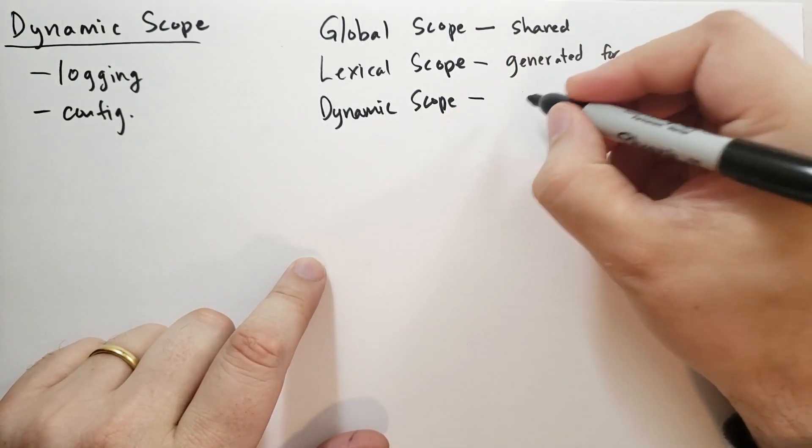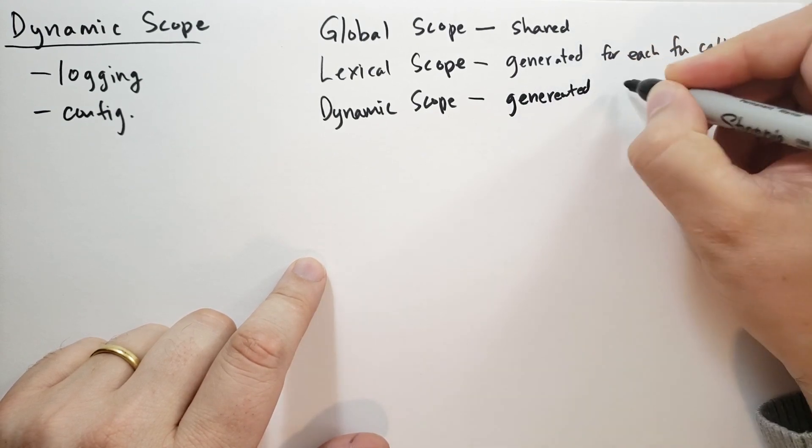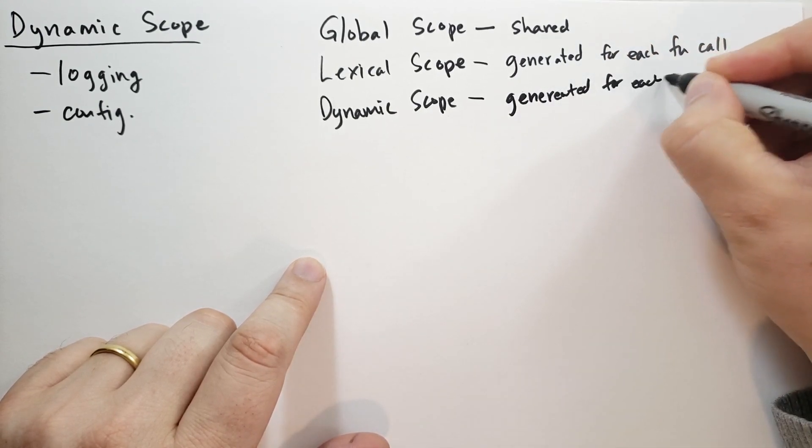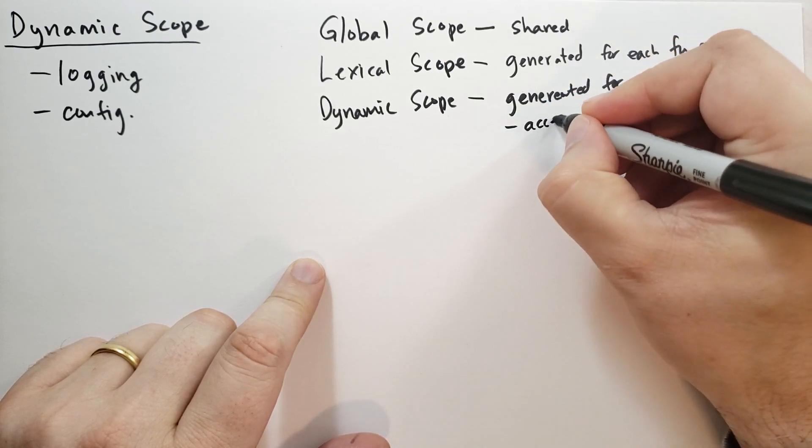Dynamic scope. This is generated also for each function call, more or less, but it's accessed by the call stack.